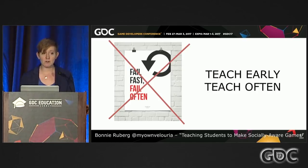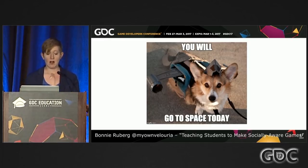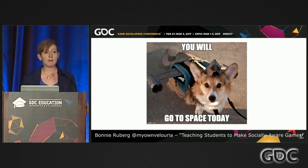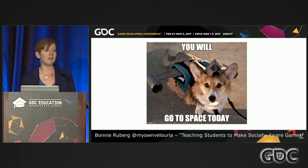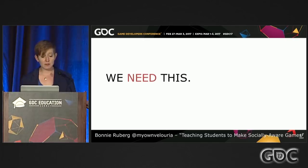Teaching students to make socially aware games isn't solvable with just one lecture or one course. The design and development of games can't be separated from culture, and students need to learn that from the very beginning. I know revamping a games program or even a single course is difficult — I'm part of the team at UCI revamping the games major as we speak — but this is mission critical. Socially aware students make better games. Our students are the next generation of developers who can bring change to video games and make them more inclusive. This is a time to get angry, to challenge our students, to empower them, and to teach them to design hope. Thank you.